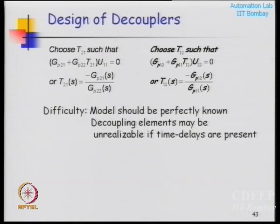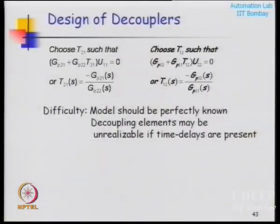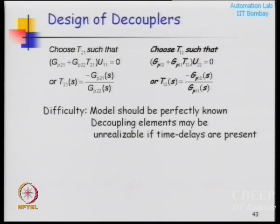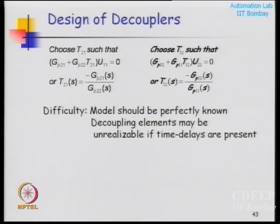The trouble is that I am designing decoupling elements T12 and T21 as functions of the process model. It is very important that if I want perfect decoupling between the loops, my model must be perfect. A perfect model is only a concept - in simulation you will have a perfect model and can have perfect decoupling, but in reality approximate models can still give a good amount of decoupling.